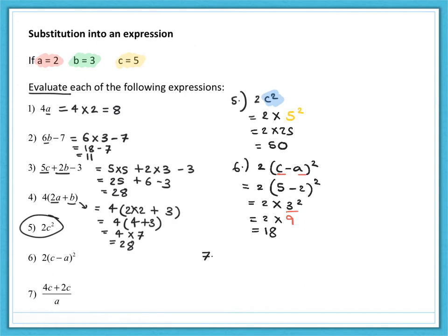And to finish this off, number seven. Four c plus two c over a. Well, we could simplify the numerator first of all. Four c plus two c is the same as six c. So this is six times c over a. So that's six multiplied by five all divided by a, which is two. So that's 30 divided by two, which is 15.